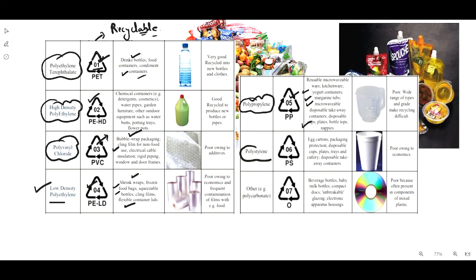Polystyrene comes under code 06 and is used for egg cartons, packaging protection, disposable cups, plates, trays, and other materials.